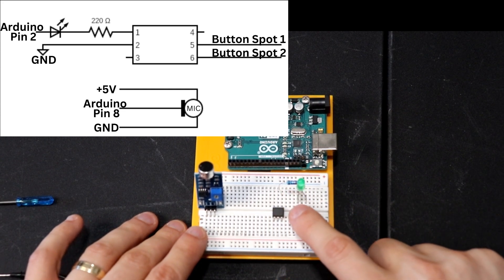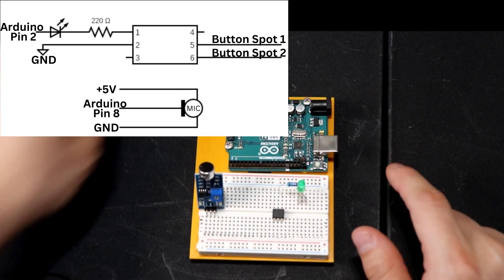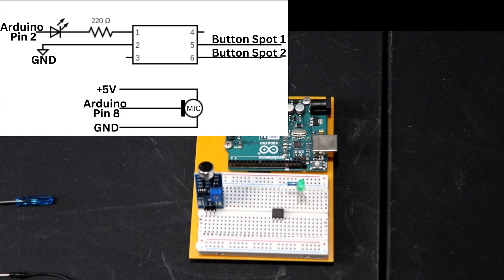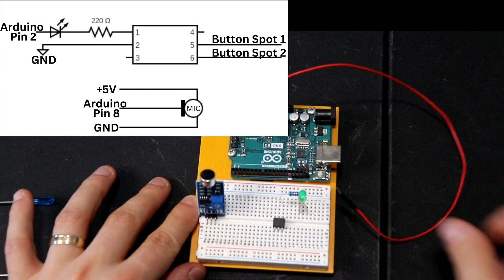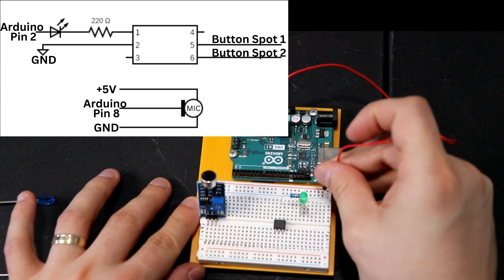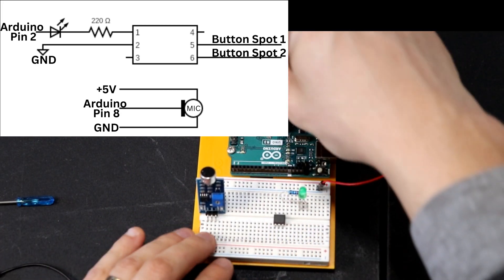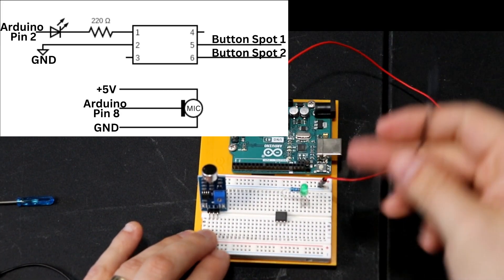With our octocoupler on the board, the microphone on the board, and then the LED and the resistor in line with pin 1 of the octocoupler, the only things left to do really are determine where the power and then where the input and output wires need to go.